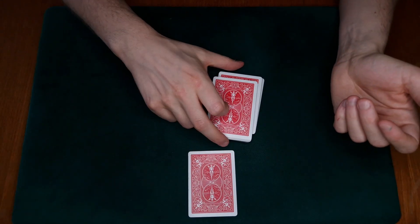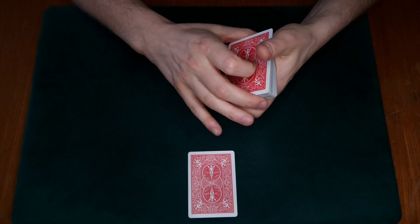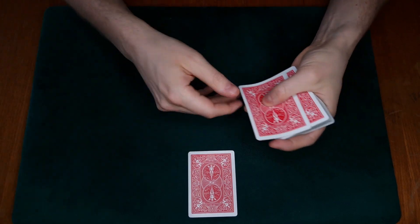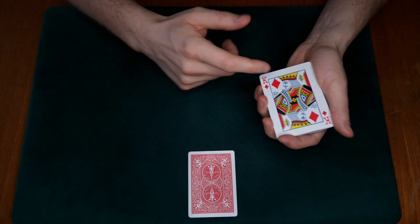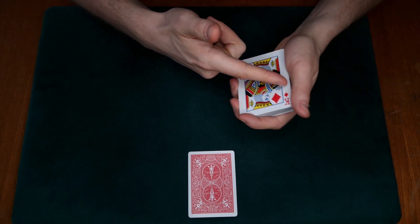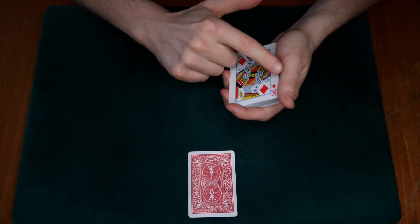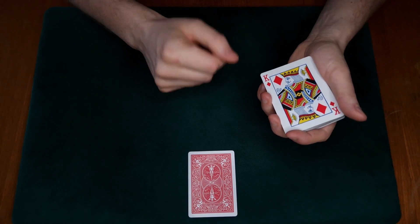And say that we're just going to look at whichever card happens to end up on top. So we do a little false shuffle or cut, and then we do a double lift. Go watch the double lift video if you don't know how to do a double lift.